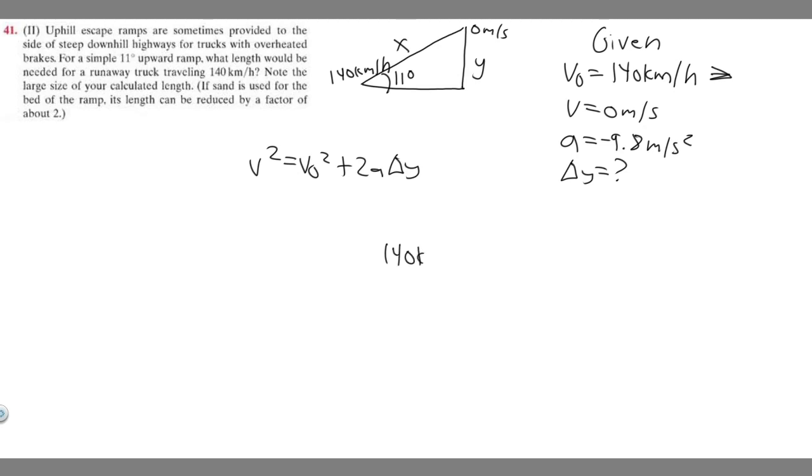So the way we do that, 140 kilometers per hour, we know there's 1,000 meters for every 1 kilometer. So that would cancel that. And then for every 1 hour, there's 3,600 seconds. That would cancel the hour, and so we just have meters per second. So if you do 140 times 1,000 divided by 3,600, you're going to get 38.88. So 38.88 meters per second. That's going to be our initial velocity.